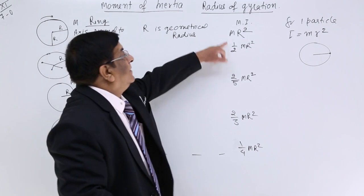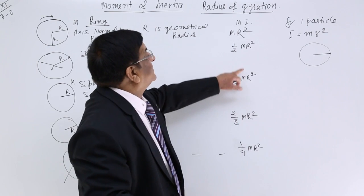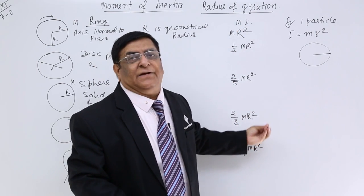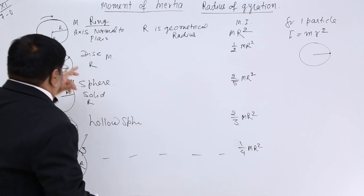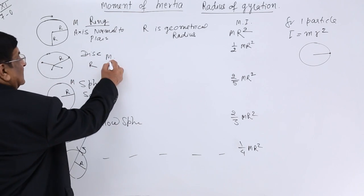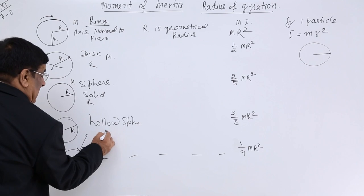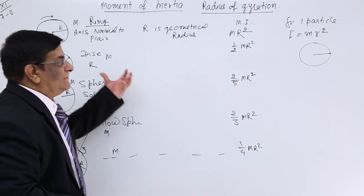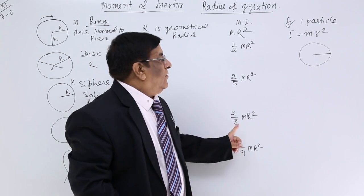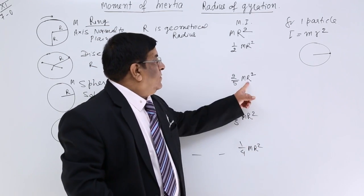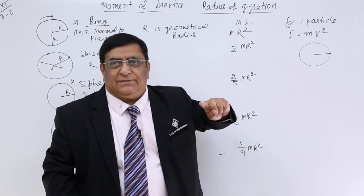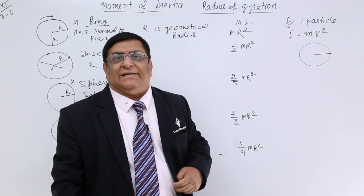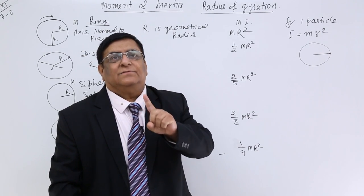We find nothing is mr² except for the ring. Why are these different? Because there are two terms: one is the geometrical radius, and one is the radius of rotation.